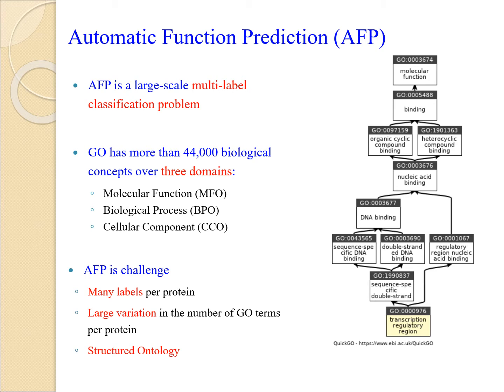Regarding each GO term as a label and each protein as an instance, AFP can be framed as a large-scale multi-label classification problem. The problem is challenging: GO is a structured ontology, each protein is associated with many labels, and there are large variations in the number of GO terms per protein.